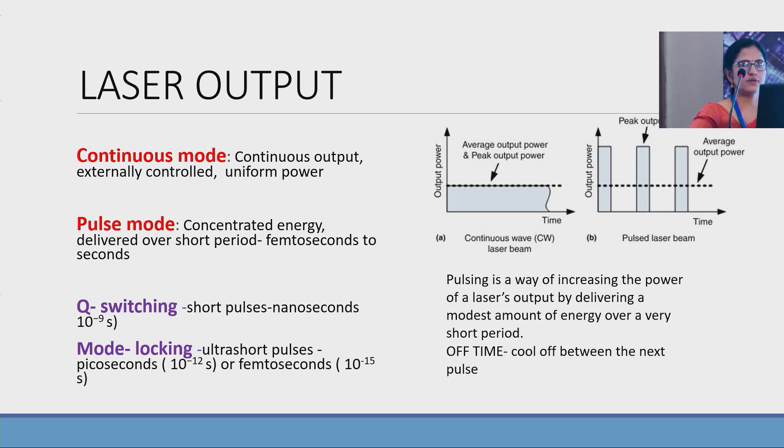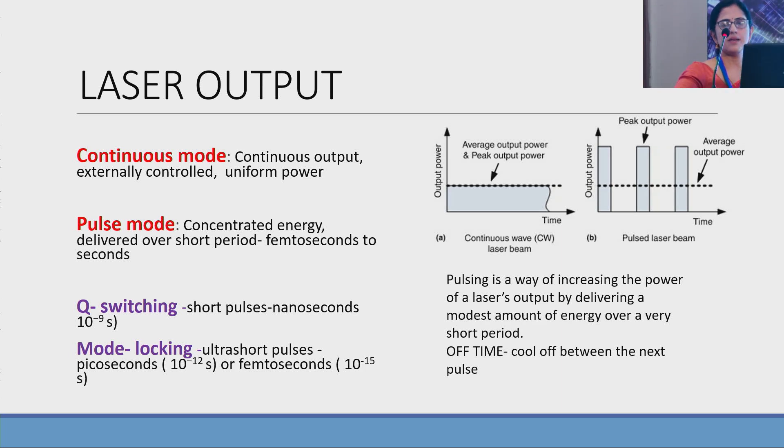Laser output can be continuous mode or pulse mode. Continuous we get uniform power and continuous. Whereas in pulse mode we get concentrated energy over short periods. It can be Q-switched or modelocked. Q-switched in the range of nanoseconds and modelocking in the range of ultra short pulses.